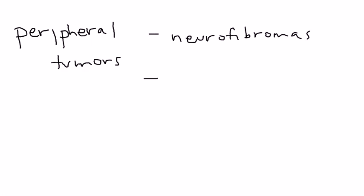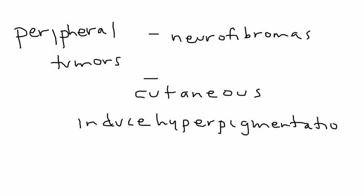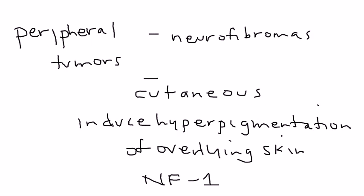The most common are cutaneous neurofibromas. These cutaneous neurofibromas induce hyperpigmentation of the overlying skin, giving a very characteristic look to these skin lesions. They're brown macules that are very characteristic and most commonly seen in neurofibromatosis type 1.